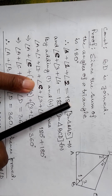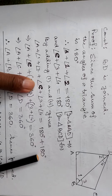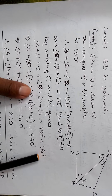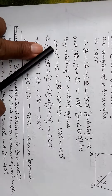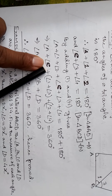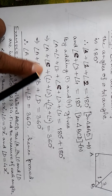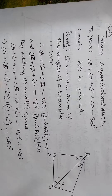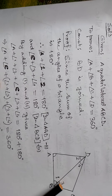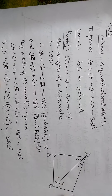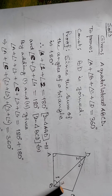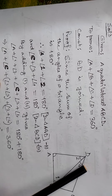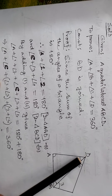Now we add the two equations: 180 plus 180. This gives us angle A plus angle C. Do we keep angle 1 or angle 3? Look at the figure. If we add angle B in complete form, then we have angle 2 or angle 4.